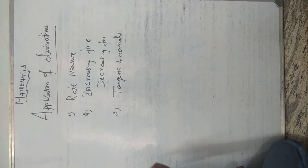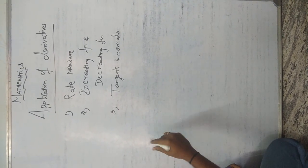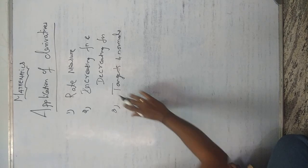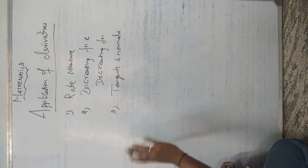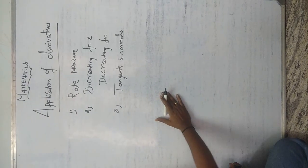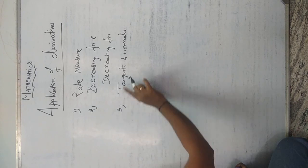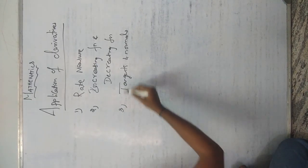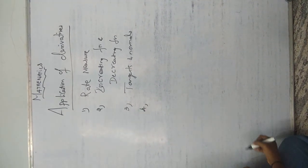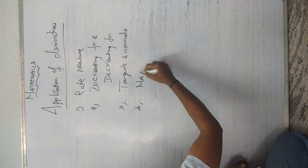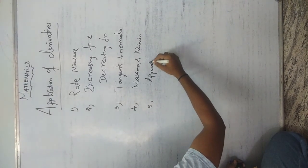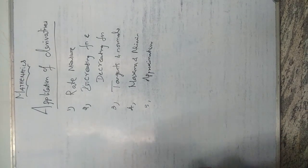Tangents and normals is worth 4 to 6 marks. Unfortunately, tangents and normals carries a maximum of 6 marks, and the maximum number of students struggle with tangents and normals. We have to concentrate more on this. In 2020 they asked 6 marks on tangents and normals. The fourth sub-topic is maxima and minima, and the fifth one is approximations. These are the five sub-topics of Application of Derivatives.